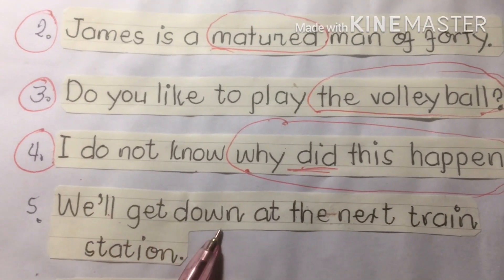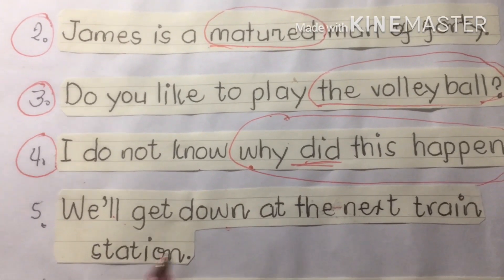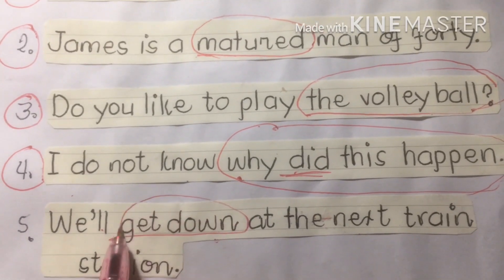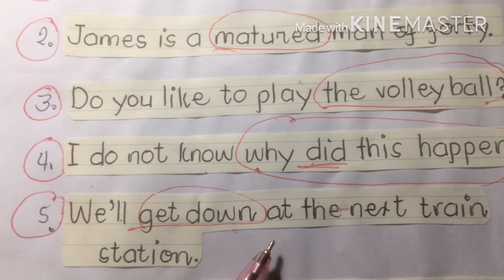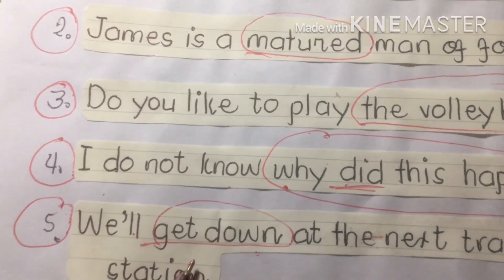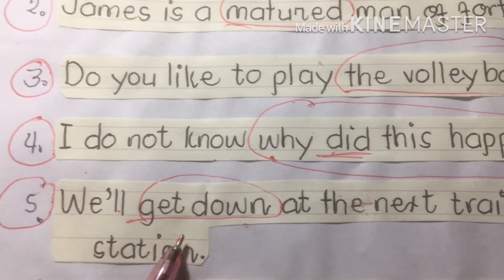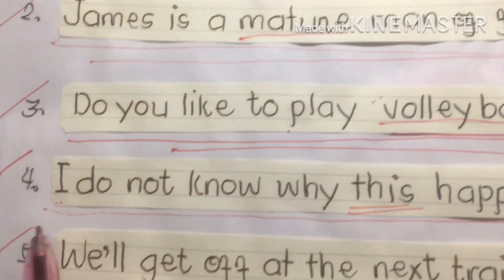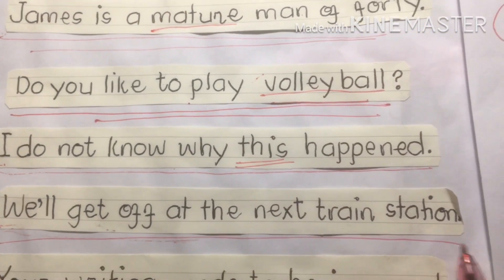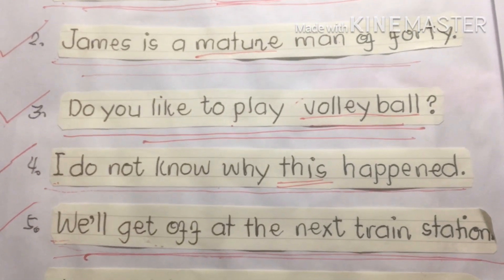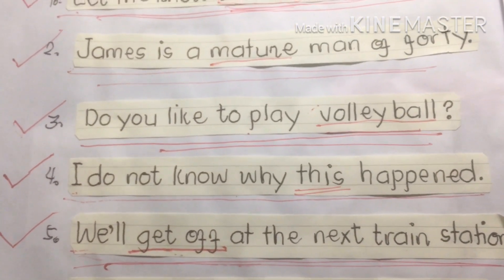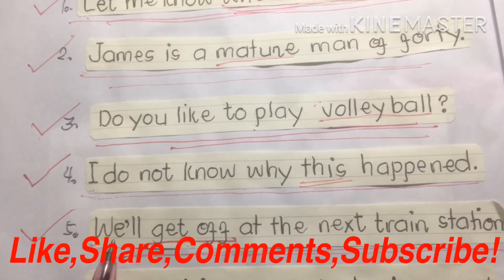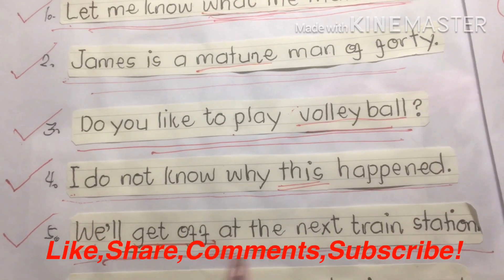Five: 'We'll get down at the next train stations.' The phrase 'get down' makes this sentence grammatically incorrect — it uses a verb that does not agree with the subject. The right one is: 'We'll get off at the next train stations.' 'Get off' agrees with the subject and verb. That is the correct sentence.